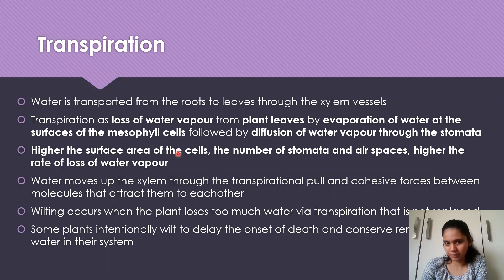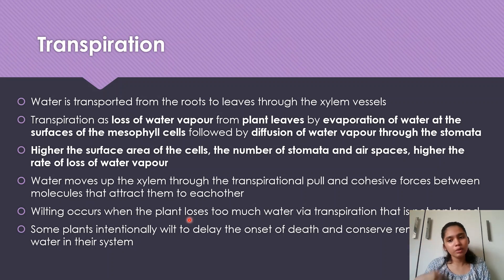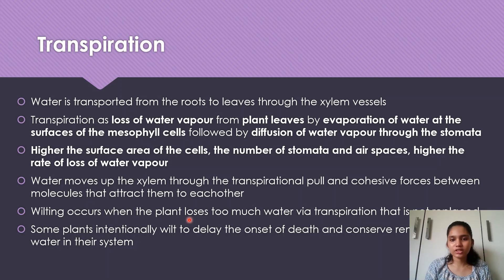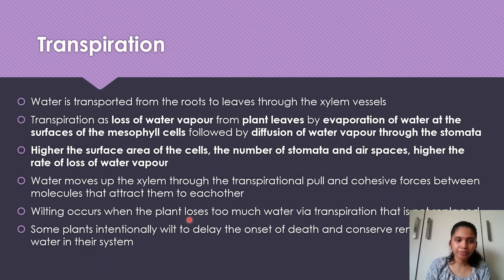Water moves up the xylem through transpirational pull. When a plant is transpiring and losing water vapor, more water needs to be drawn in to replace the lost water, exerting a pull that draws water up the plant — this is transpirational pull. There are cohesive forces between water molecules, so they form a long continuous chain that moves up the xylem together. This is called the transpirational stream.